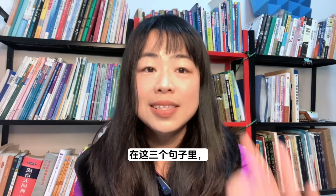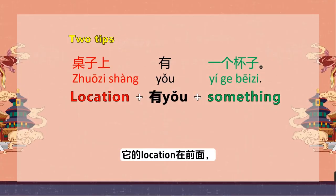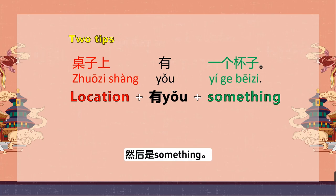你们注意到了吗？在这三个句子里，它的location在前面，然后是有，然后是something。这个structure是一样的。